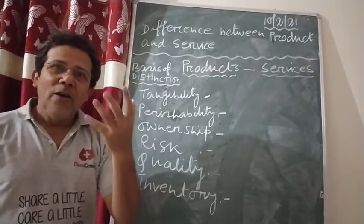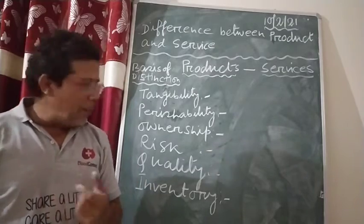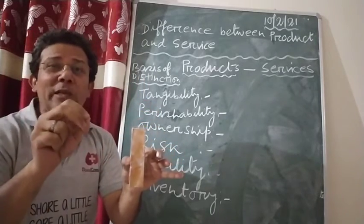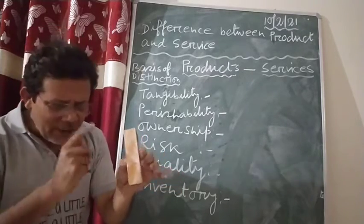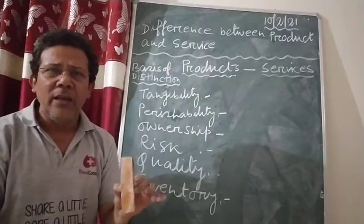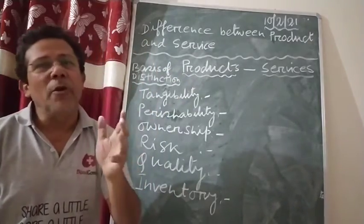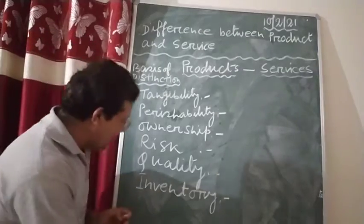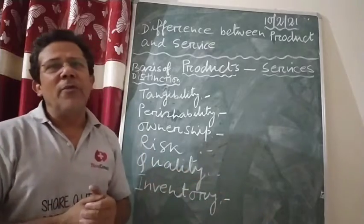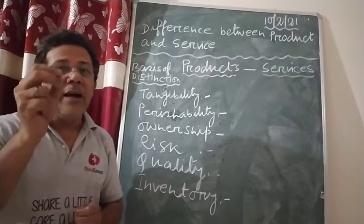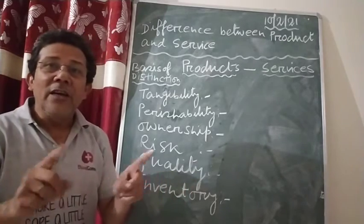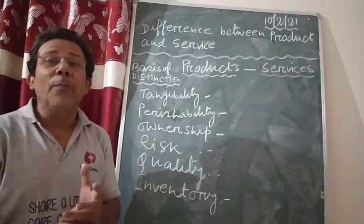The next point is quality. For products, you can control the quality — a product can be produced according to the standard given by the buyer. If I go to a factory and say I want a duster of this size and shape, all the dusters can be made the same size and shape. But for service, the quality cannot be controlled because the same behavior or nature may hurt someone else while another person may enjoy it. That is why they say service quality has no control, because it depends on the person concerned.